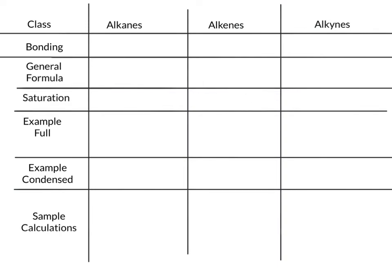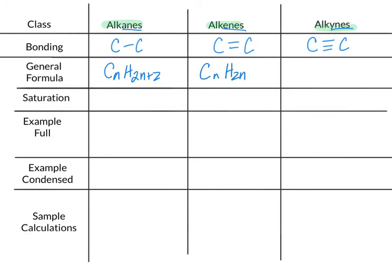This chart helps us compare the three aliphatic hydrocarbons: alkanes, alkenes, and alkynes. The first section looks at bonding. Alkanes have all carbon-carbon single bonds. Alkenes have at least one carbon-carbon double bond, with all other bonds being carbon-carbon single bonds. Alkynes have at least one carbon-carbon triple bond, with the others being carbon-carbon single bonds. For the general formulas: alkanes are CₙH₂ₙ₊₂, alkenes are CₙH₂ₙ, and alkynes are CₙH₂ₙ₋₂, where the number at the end is what varies. As we increase the number of multiple bonds, we decrease the number of hydrogens. Recall that n equals the number of carbons present in the formula.